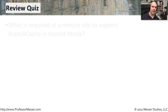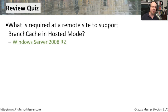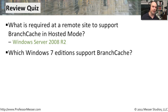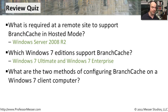Let's review some topics relating to Branch Cache. What is required at a remote site to support Branch Cache in hosted mode? You need a Windows Server 2008 R2 — other versions of Windows Server will not operate in Branch Cache mode. Which Windows 7 editions support Branch Cache? Only Windows 7 Ultimate and Windows 7 Enterprise. What are the two methods of configuring Branch Cache on a Windows 7 client? Group Policy or the NetSH command at the command line.